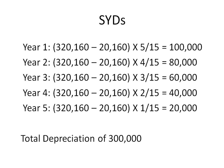For sum of the years' digits, we take the cost — $320,160 minus the salvage value of $20,160 — times the remaining years' depreciation divided by the sum of the years' digits. So in year 1 it's 5/15, in year 2 it's 4/15, then 3/15, 2/15, 1/15, etc. What we get is $100,000 of depreciation in year 1, then $80,000, $60,000, $40,000, $20,000, for a total depreciation of $300,000.